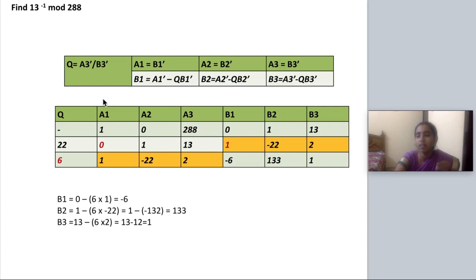Always remember you have to use only the quotient part. If you are performing mod, it is remainder. If you are performing division, it is only quotient. Never ever use a decimal part or a fractional part. Don't do round off. Only the quotient must be written here. So 6 and A1, A2, A3 values are previous B1, B2, B3. So it is 1, minus 22 and 2.